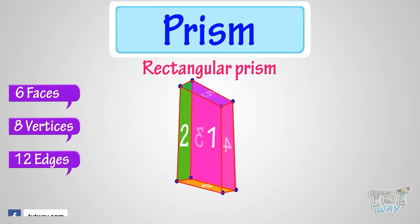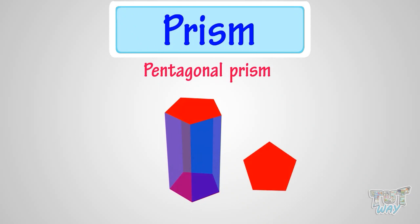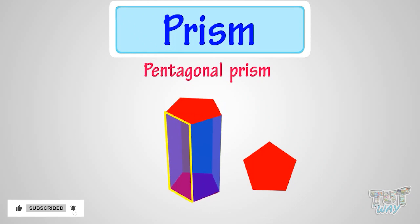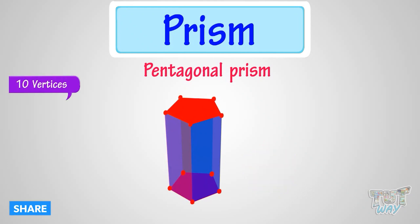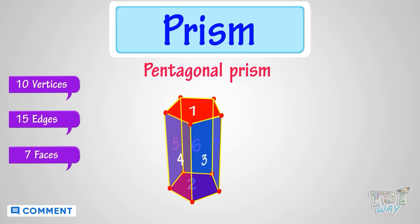This is a pentagonal prism, because its top and bottom faces are pentagon in shape and all other faces are rectangular. It has 10 vertices, 15 edges, and 7 faces. There can be more types too, depending on the shape of its top and bottom faces.